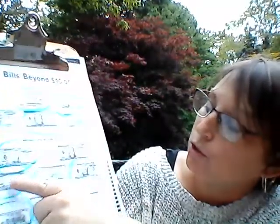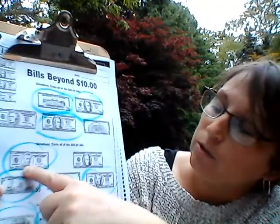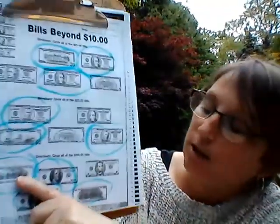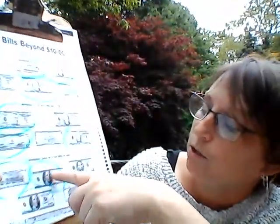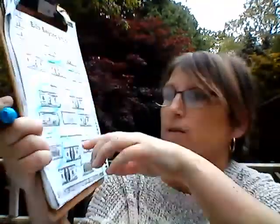How many fifties? One, two — two fifties. That equals a hundred, so that's a hundred and fifty dollars in fifties. And how many hundreds do we have? We have one, two, three, four — so that's four hundred dollars in hundreds. You guys are doing really good with this money, I'm very very proud of you!